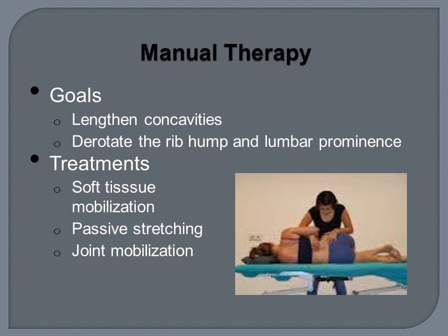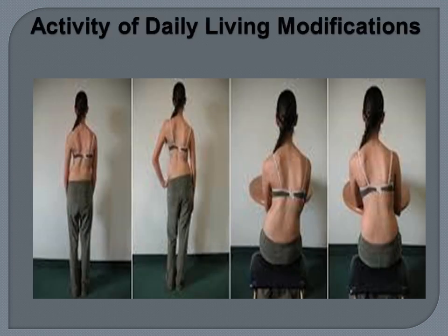Manual therapy goals include lengthening concavities and derotating the rib hump and lumbar prominences. We use soft tissue mobilization, passive stretching, and joint mobilization. We also focus treatment around corrections during activities of daily living — for example, teaching patients to alter positions of their legs and hands while standing to provide the spine with a more symmetrically loaded experience, and working on desk setup and seated posture to improve symmetry and decrease the tendency to lean into curves.